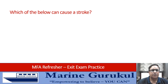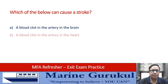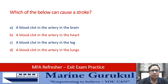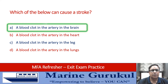Which of the following can cause a stroke? A blood clot in the artery in the brain, a blood clot in the artery in the heart, a blood clot in the artery in the leg, or a blood clot in the artery in the lungs? The answer is A — a blood clot in the artery in the brain could be the cause of a stroke.